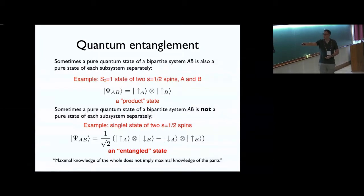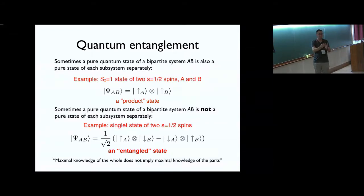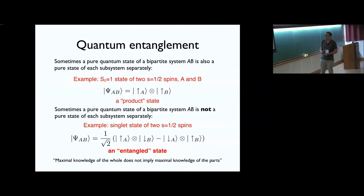The singlet is the simplest example of a state that is a perfectly fine pure quantum state for the whole system, but if I ask what is the wave function for spin A, there isn't a good answer. The only description we can have for spin A is not a pure state — it's a mixed state or a density matrix. This is the idea of entanglement. We may have a perfect description of the singlet, but if you just look at one of the spins, you can't have a pure state maximal description of it. What you have instead is a density matrix.